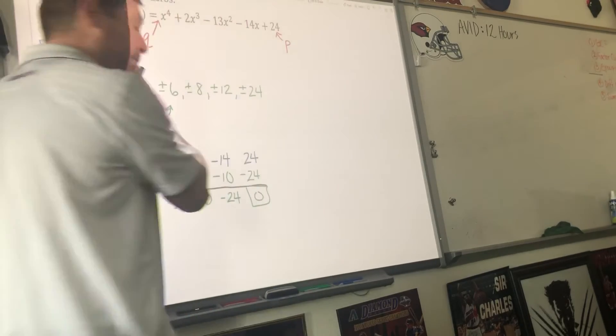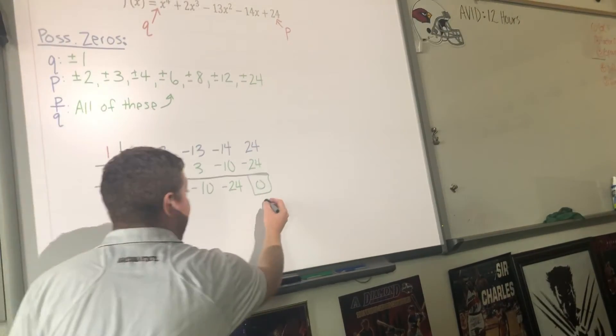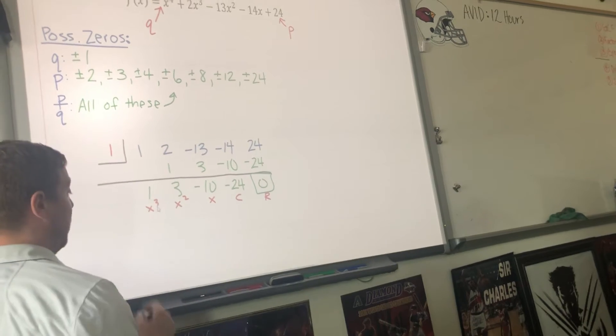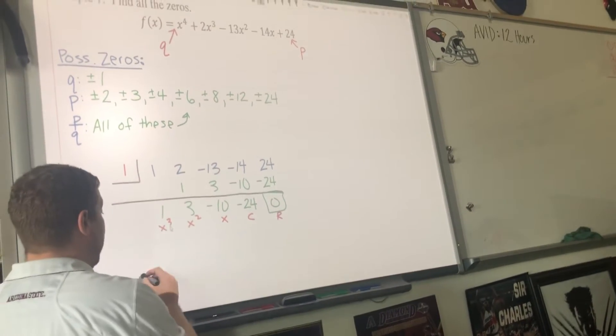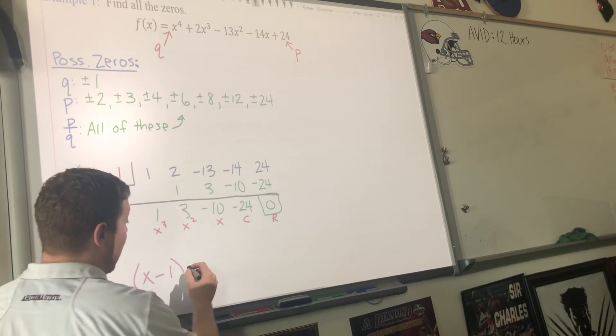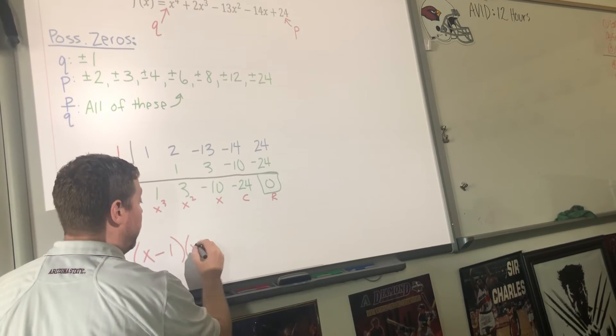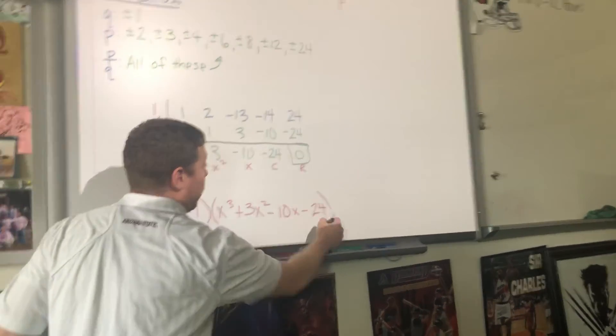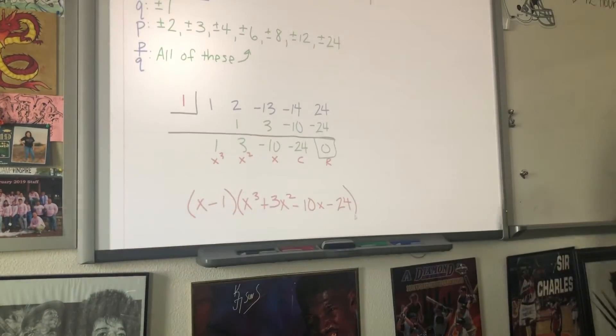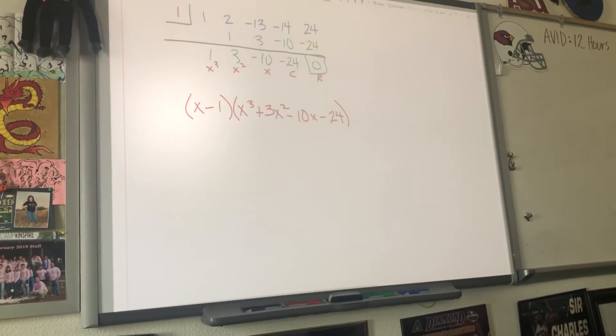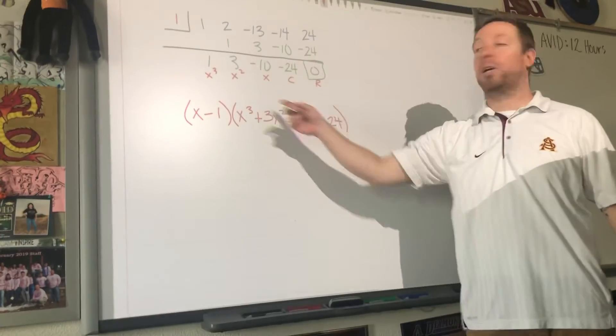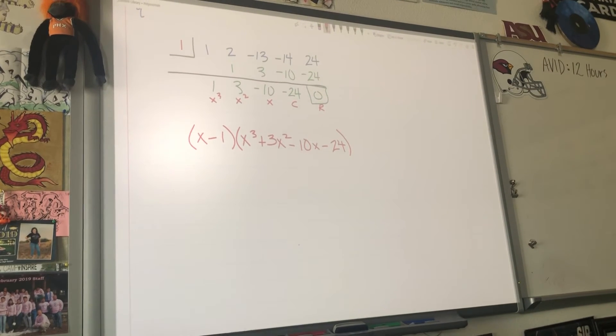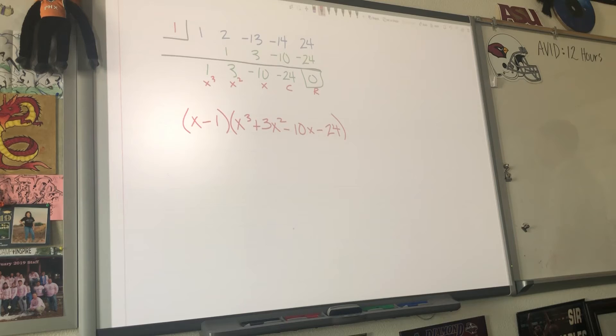Yes! Yes! Out of all of those possible zeros, we guessed one of them on the first try. Dang! Alright. Let's see what we got. So, this is my remainder. This is my constant, my X term, my X squared term, my X cubed term. Let me write what I got. If the zero is one, the factor is X minus one. Times this. 1X cubed. Plus 3X squared. Minus 10X. Minus 24. What I have just written down is this. This factor times this polynomial, this whole red line, is the exact same thing as the original problem, only I'm one step closer to factored form.